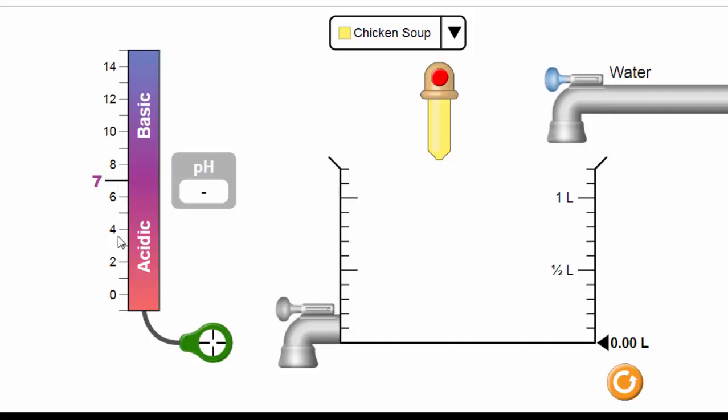And the lower the value of the pH, the higher the acidity. By the same token, the higher the value of pH, the higher the basicity of the solution. Now let's see how we can use this simulation to answer the questions in the lab.